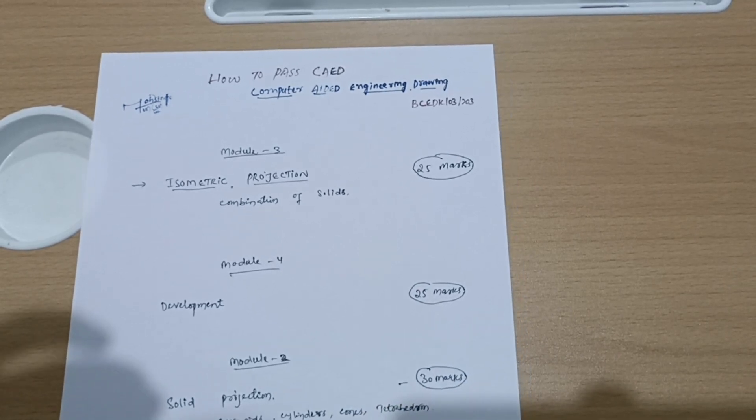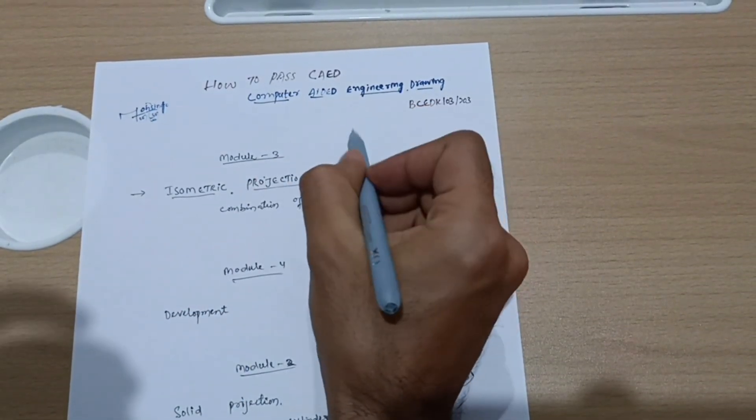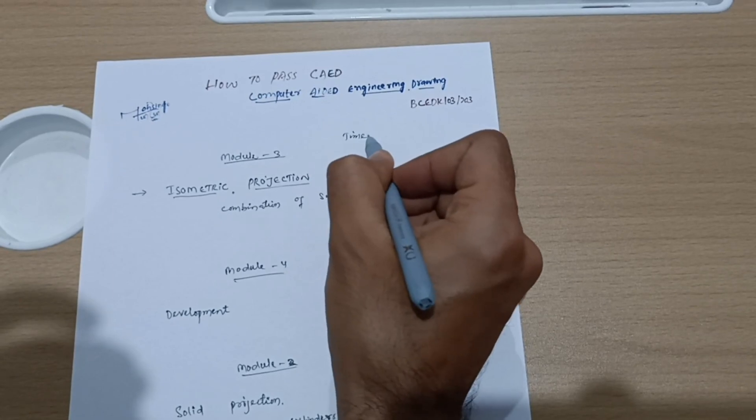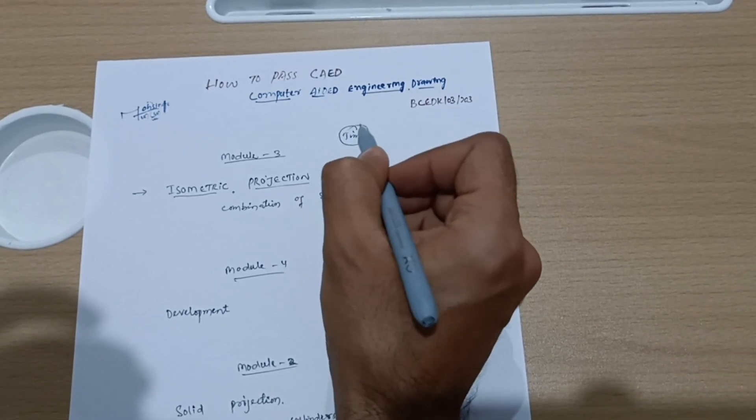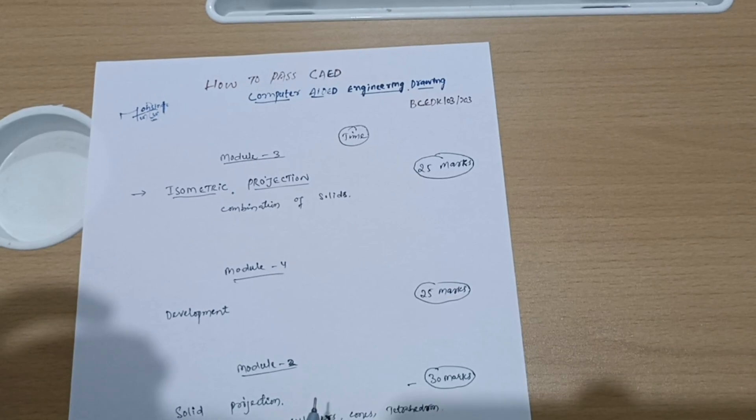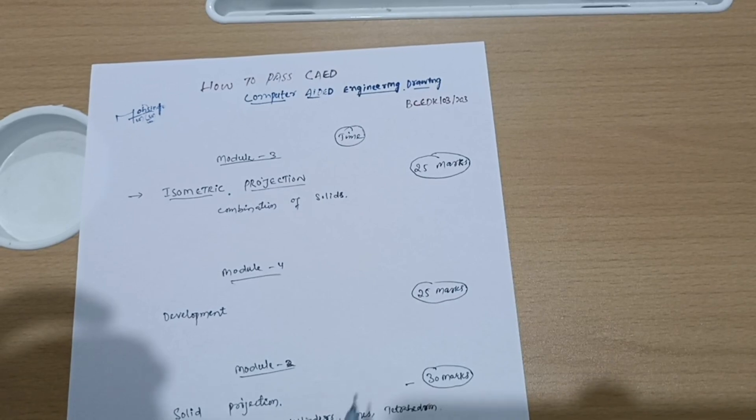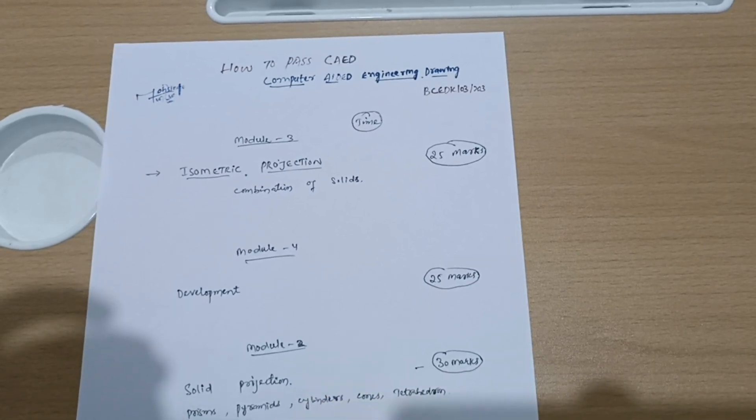You should take care of time in this CAD subject. Time plays an important role. You should spend only 20 to 30 minutes for sketching, then you have to draw those sketches in the computer system. At least two and a half hours you should save for sketching.